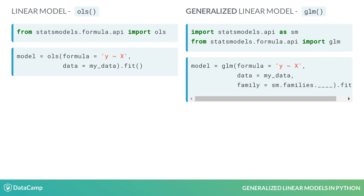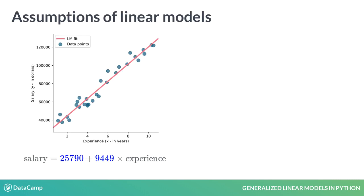The GLM function is considerably similar. It is also imported directly and it uses one additional argument, family, which denotes the probability distribution of the response variable. More on this in the next lessons. Using the OLS function, we obtain the linear fit. The regression function tells us how much the response variable y changes on average for a unit increase in x.